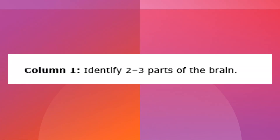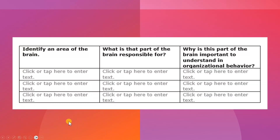In your assignment prompt you will see that in column one you're going to identify two to three parts of the brain from that list, and these parts will go in the first column of the table. Here is column one — in this first column you're going to be entering in those two to three parts of the brain, each one in its own row. You're going to identify a part here, a part here, and if you choose to do a third, the third part goes here.